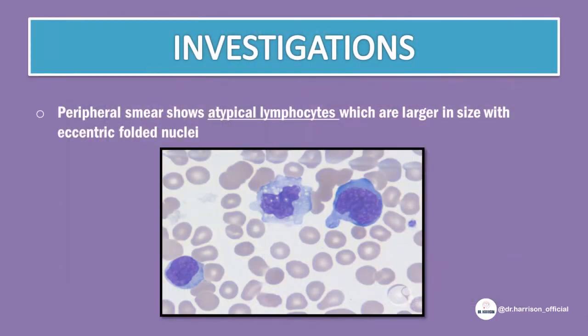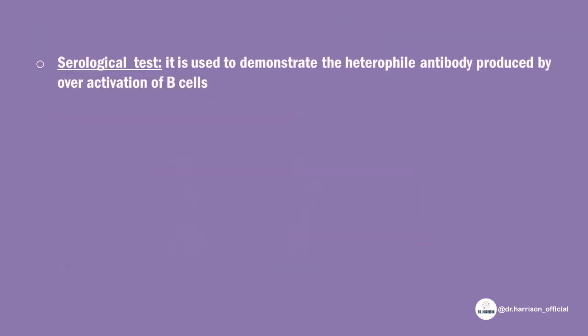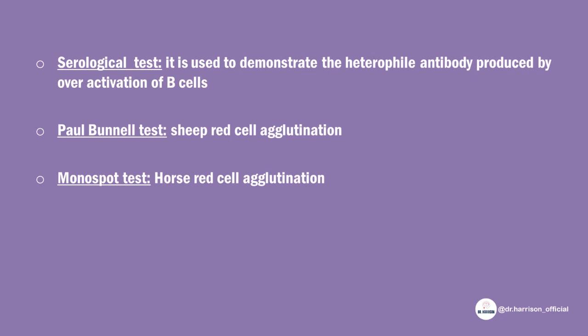Moving on to investigation. Peripheral smear shows atypical lymphocytes which are larger in size with eccentric folded nuclei. Serological tests are used to demonstrate the heterophile antibody produced by overactivation of B cells. First, the Paul-Bunnell test: sheep red cells agglutinate in the presence of patient's blood. Second, the Monospot test: horse red cells agglutinate in the presence of patient's blood.